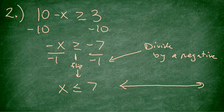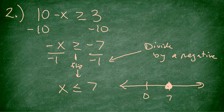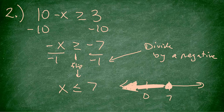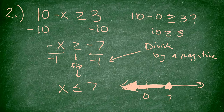I make my number line. I put 7 on the graph and I like to put 0 as well. It's a closed circle because there's a bar underneath — less than or equal to — so I shade to the left. I pick 0 to check: is 10 minus 0 greater than or equal to 3? Is 10 greater than or equal to 3? Yes, it is. Good.